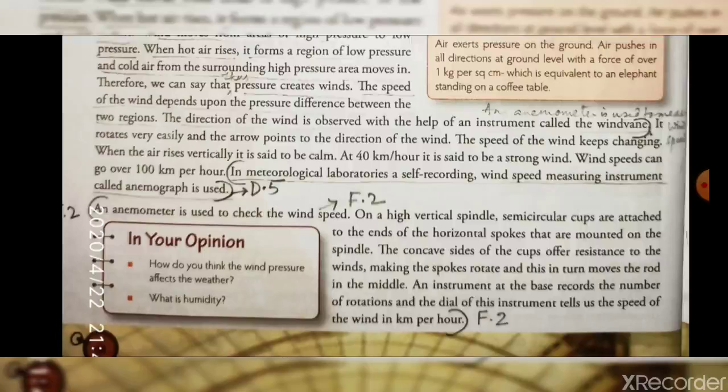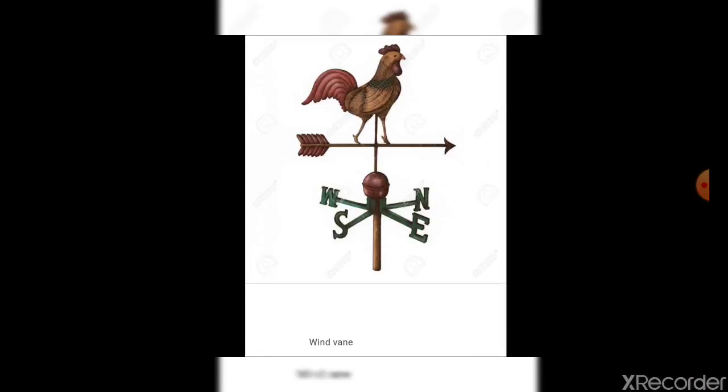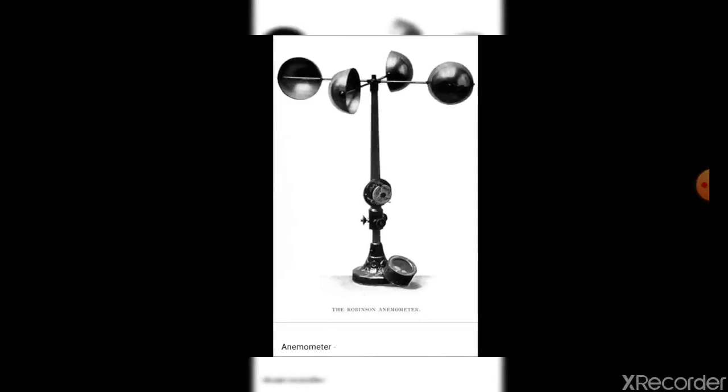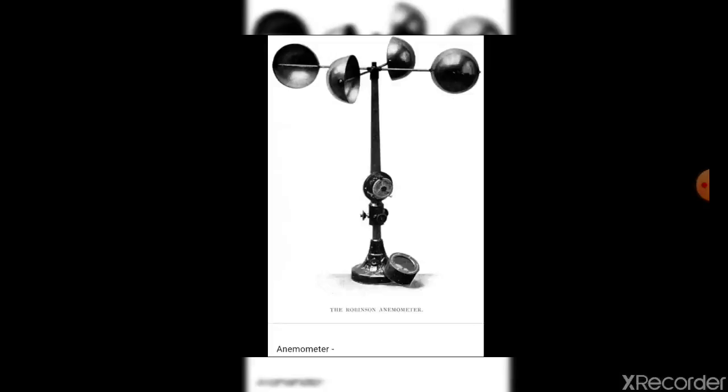The direction of the wind is observed with the help of an instrument called a wind vane. An anemometer is used to measure wind speed. It is used to check the wind speed on a high vertical spindle with semi-circular cups attached to the ends of the horizontal spokes that are mounted on a spindle. The concave sides of the cups offer resistance to the winds, making the spokes rotate. An instrument at the base records the number of rotations and the dial tells us the speed of the wind in kilometer per hour.